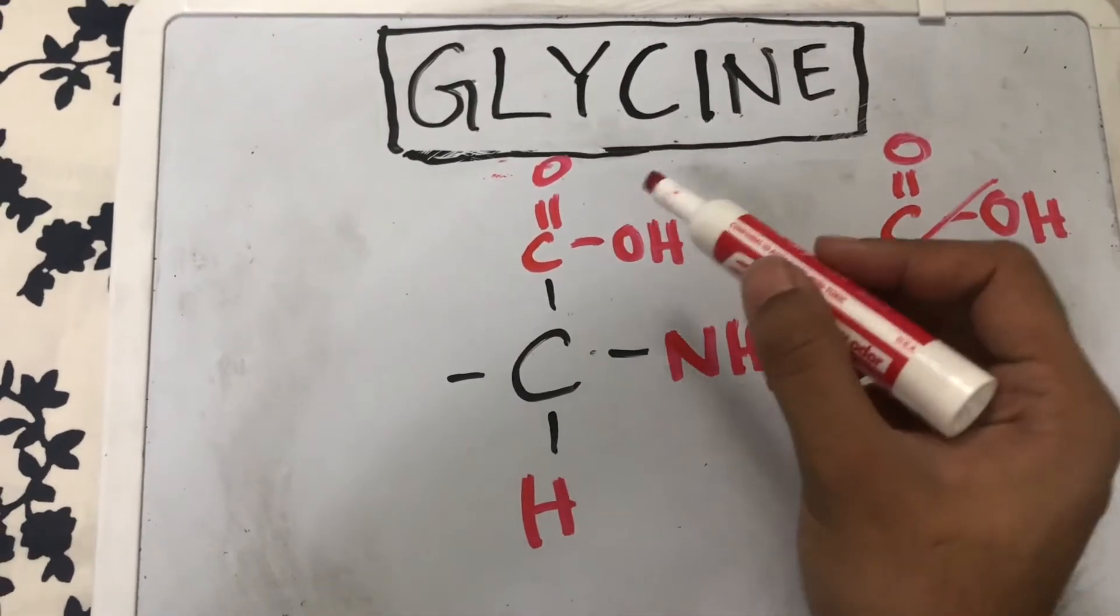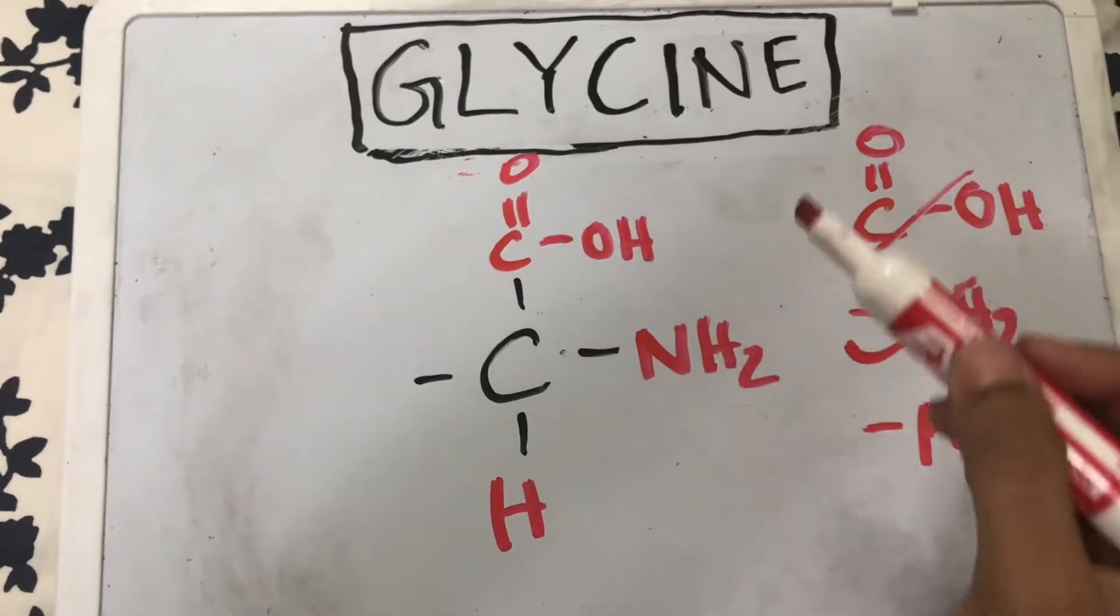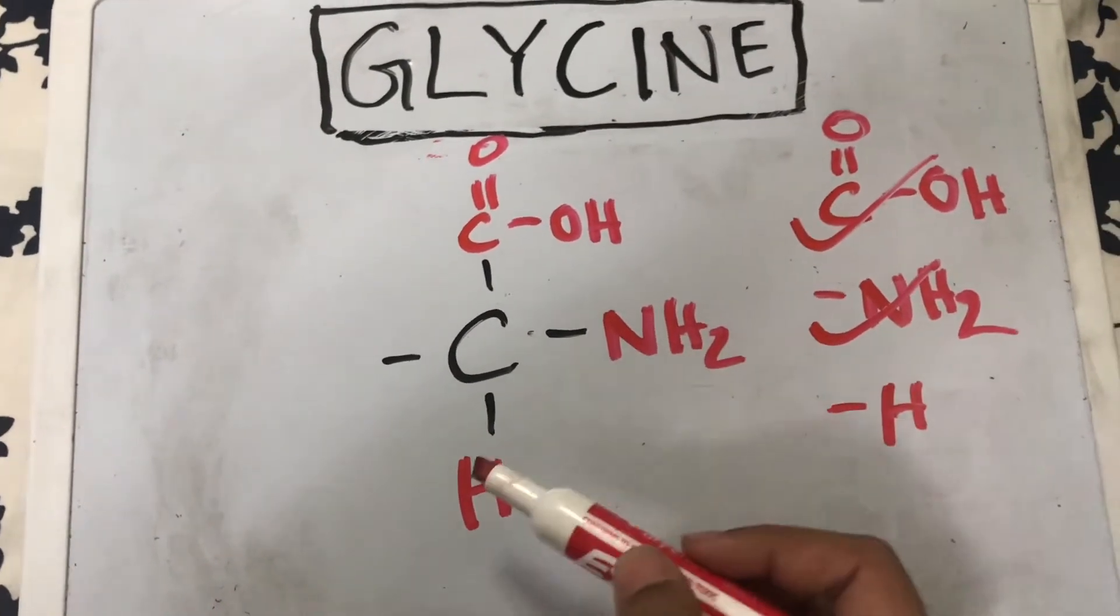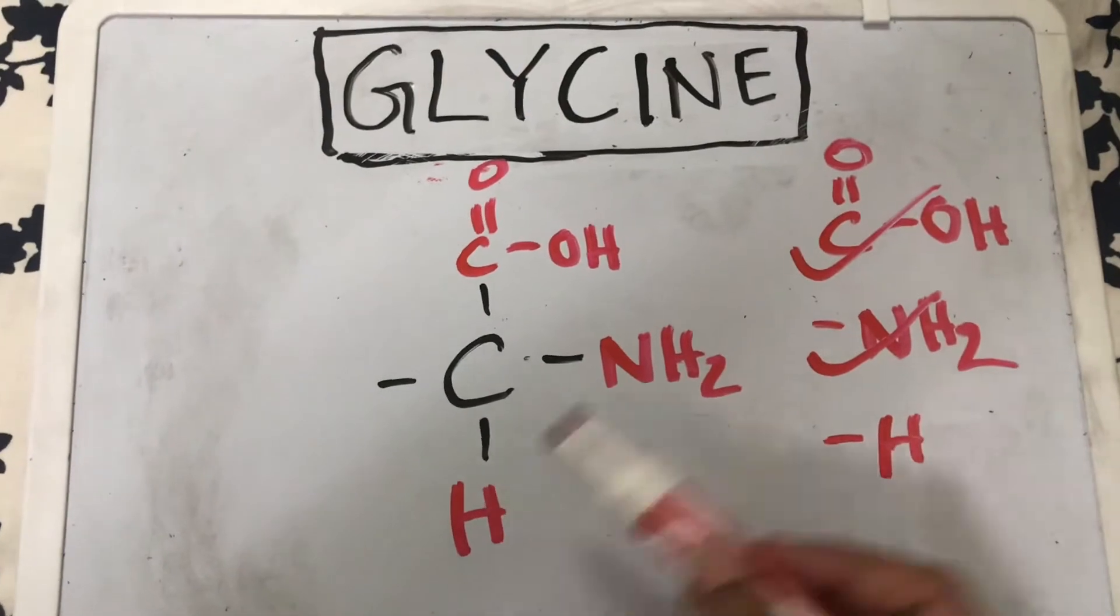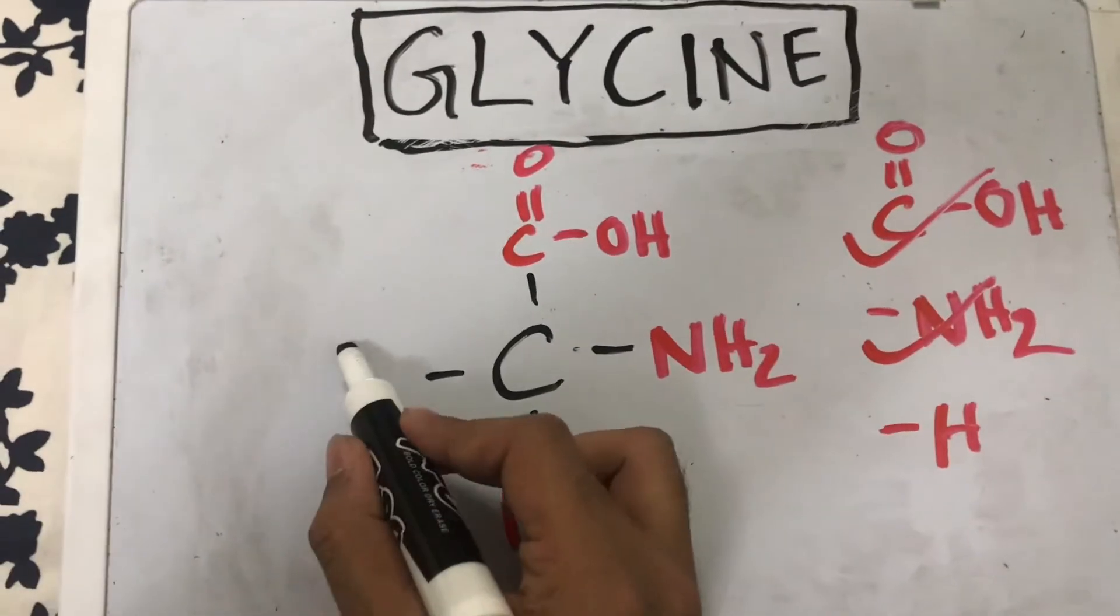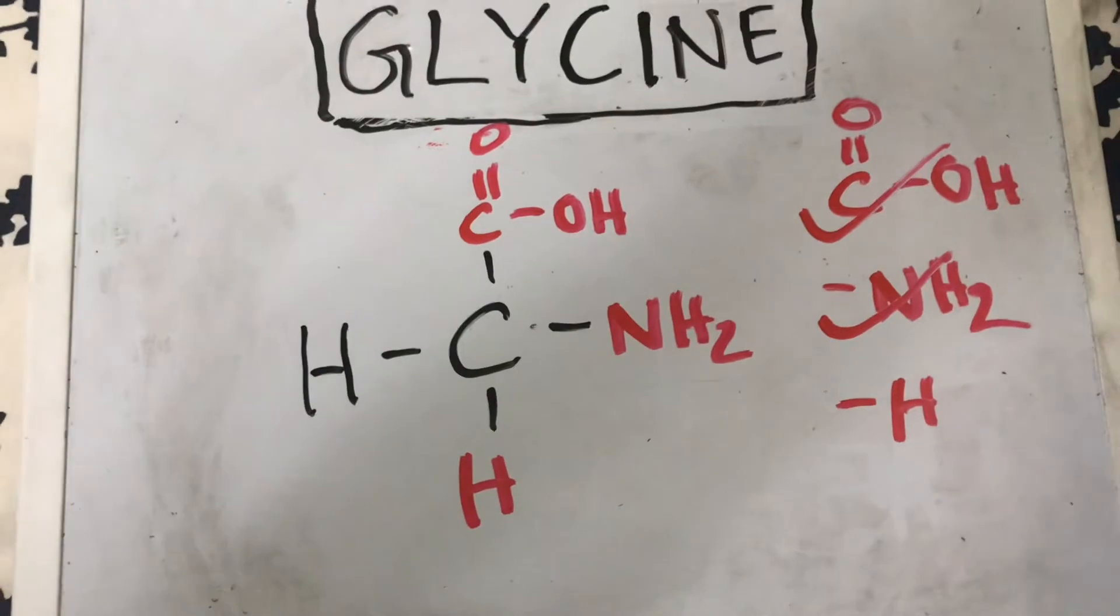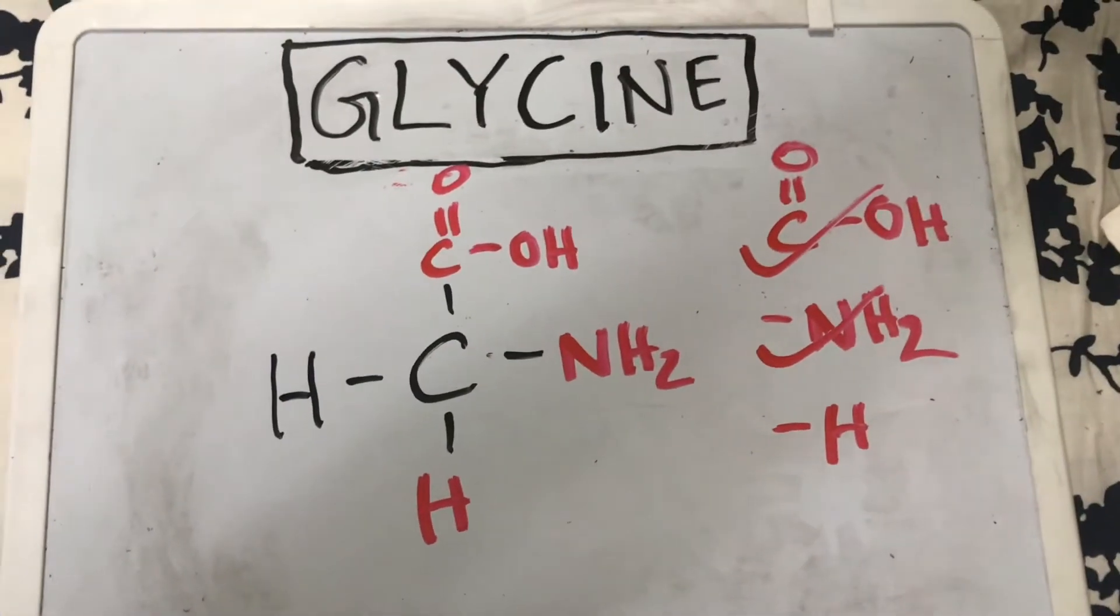So you have your carbon attached to the carboxylic acid, your amino group, and your smallest side chain, the hydrogen. Now you have one remaining spot that would be taken up by another hydrogen. So that's it—that's the structure of glycine.